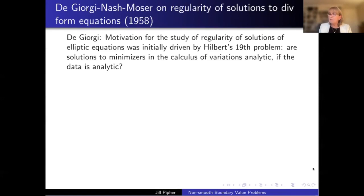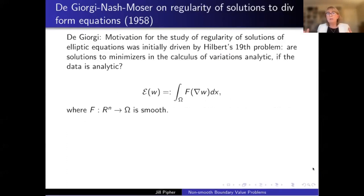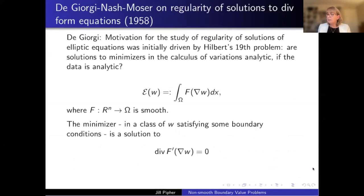So Hilbert's 19th problem asks are solutions to minimizers in the calculus of variations analytic if the data is analytic. So it's a regularity problem, but to one extreme with talking about analytic solutions. So what kind of minimizers in the calculus of variations we're looking at a functional? That has this form. We have a domain. We have a collection of functions w that maybe satisfy some kind of bound condition on the boundary of the domain. We're plugging them into this functional and we're looking for the minimizer. And the minimizer in this class of functions is going to be a solution to one of these divergence equations.